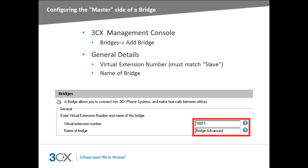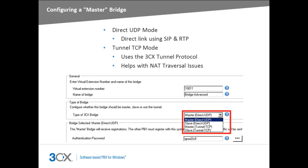Here, we must keep in mind that the slave side must use the same virtual extension number to be able to connect successfully. Next, enter a name for the bridge. From the type of 3CX bridge field, you must now select the connection mode that the bridge connection will utilize: Direct UDP or Tunnel TCP.